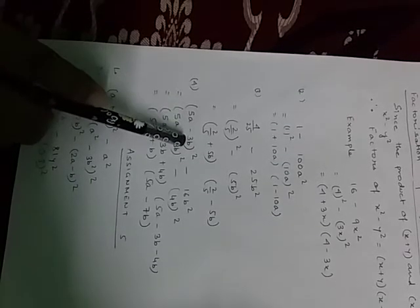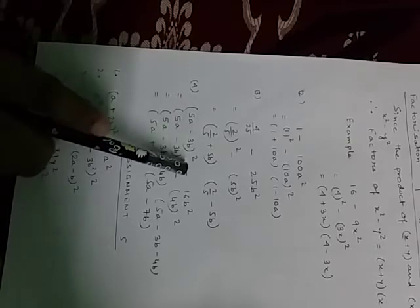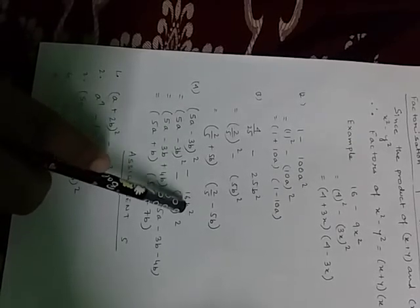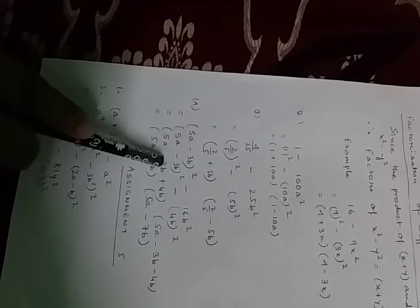Here 5a minus 3b, they are already in that a square form. Here 16b square, I have to convert it into 4b whole square. Now this whole is my a, that's why 5a minus 3b plus 4b, 5a minus 3b minus 4b.